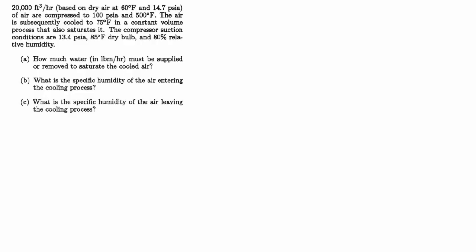20,000 cubic feet per hour, based on dry air at 60 degrees and 14.7 psia of air, are compressed to 100 psia and 500 degrees. The air is subsequently cooled to 75 degrees in a constant volume process that also saturates it. The compressor suction conditions are 13.4 psia, 85 degrees dry bulb, and 80% relative humidity. They want to know: (a) how much water in pounds per hour must be supplied or removed to saturate the cooled air, (b) what is the specific humidity of the air entering the cooling process, and (c) what is the specific humidity of the air leaving the cooling process.